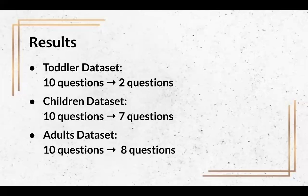We reduced the number of questions to 2, 7, and 8 for toddlers, children, and adults respectively, while maintaining a 90% F1 score.